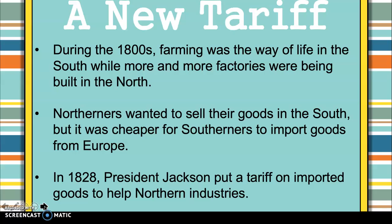During the 1800s, here in the South, farming is the way of life. Everybody is making money off of farming, especially cotton. But in the North, you are going to see more factories being built. The North wanted to sell their goods in the South, but it was cheaper for Southerners to import their goods from Europe — the North was selling them for way more than what other places around the world were selling.